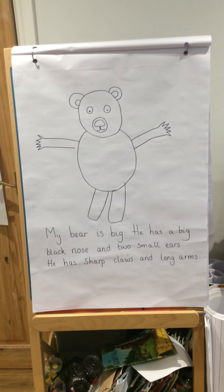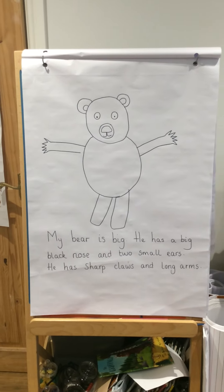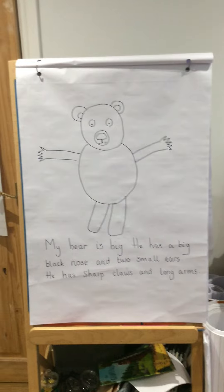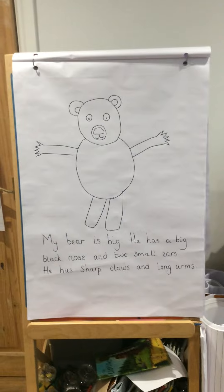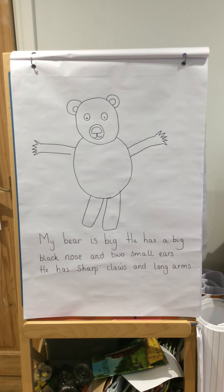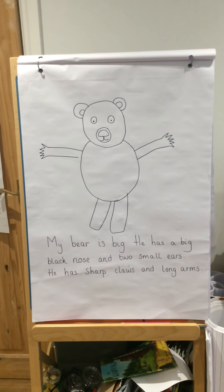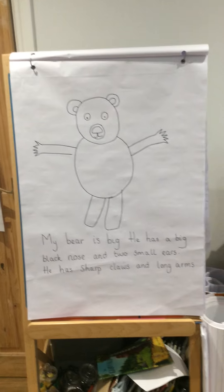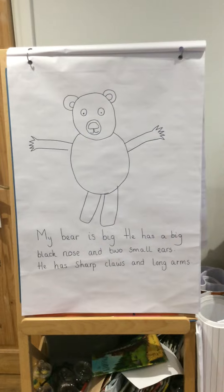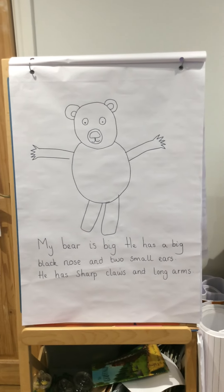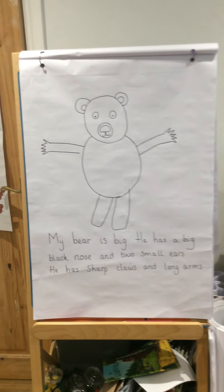Okay, so for English today we've been doing our story 'We're Going on a Bear Hunt'. We did a story map where we drew pictures of all the main things that happen in the story to help us remember and retell it. We then did some writing, some describing about the weather and the bear in the story, which linked in nicely with our topic as well.